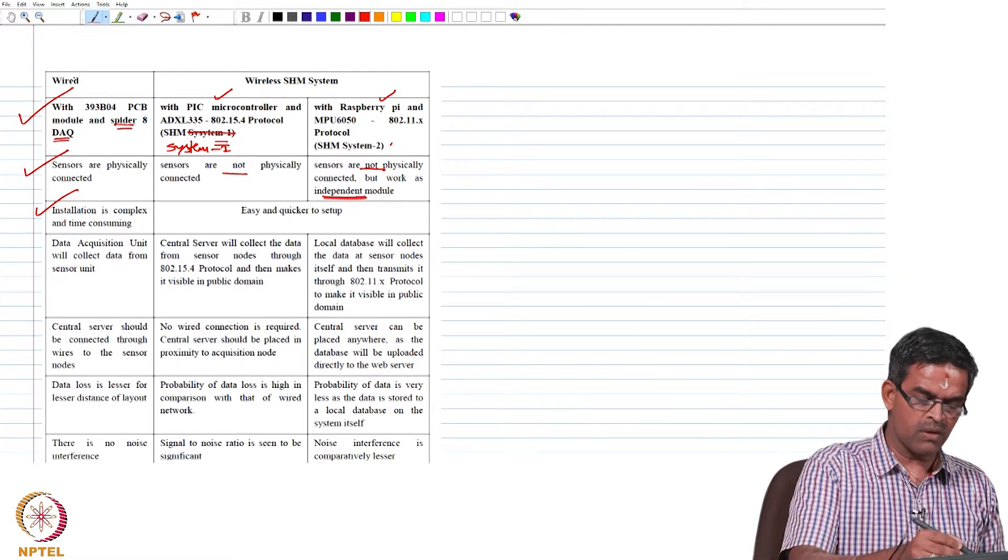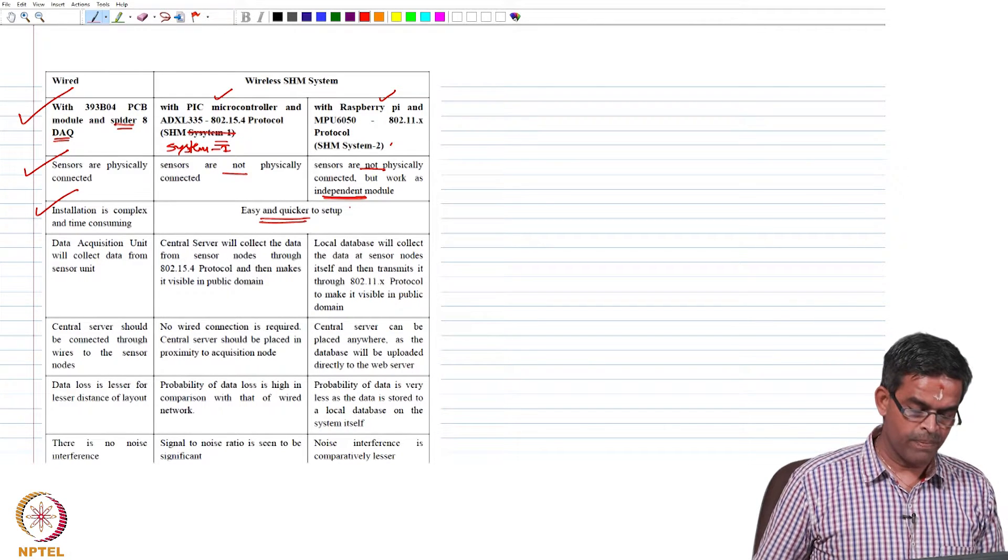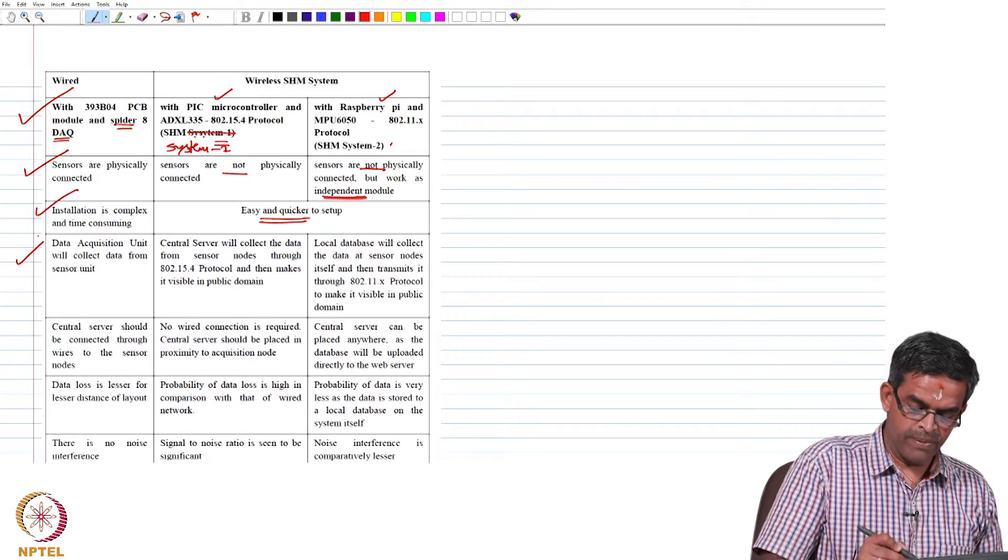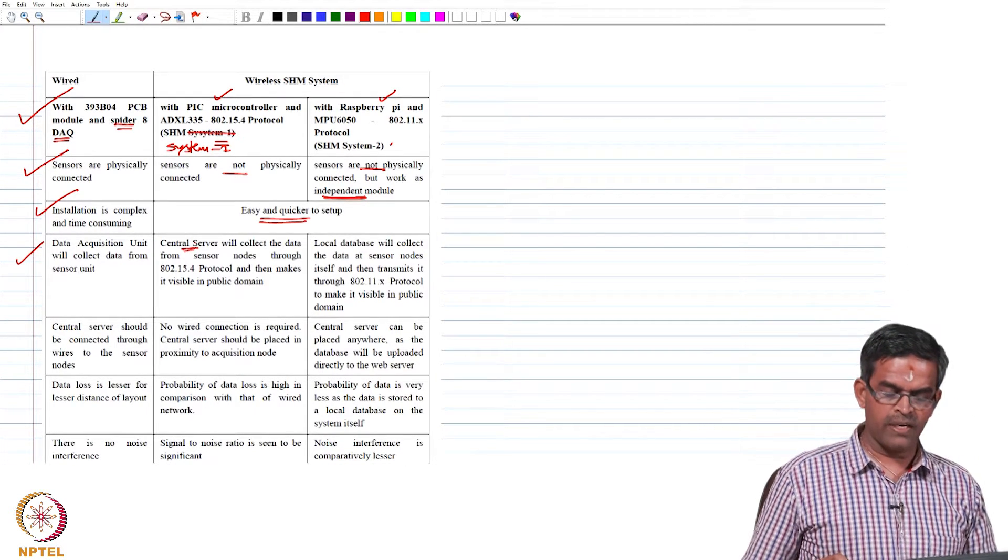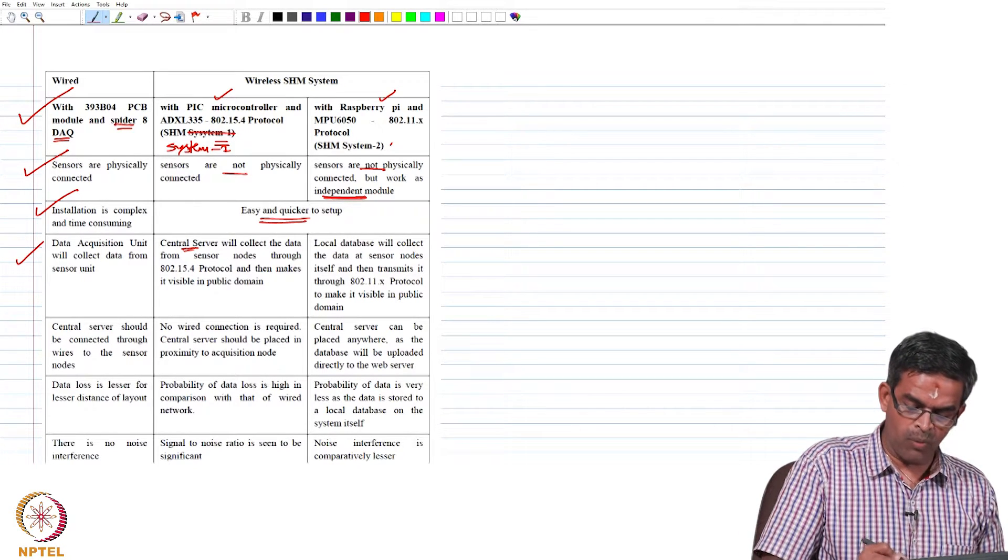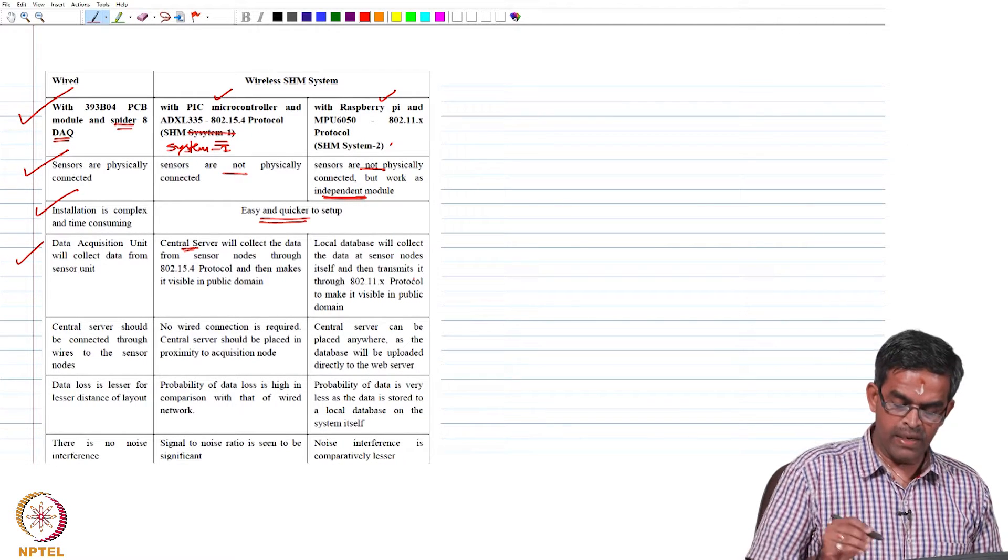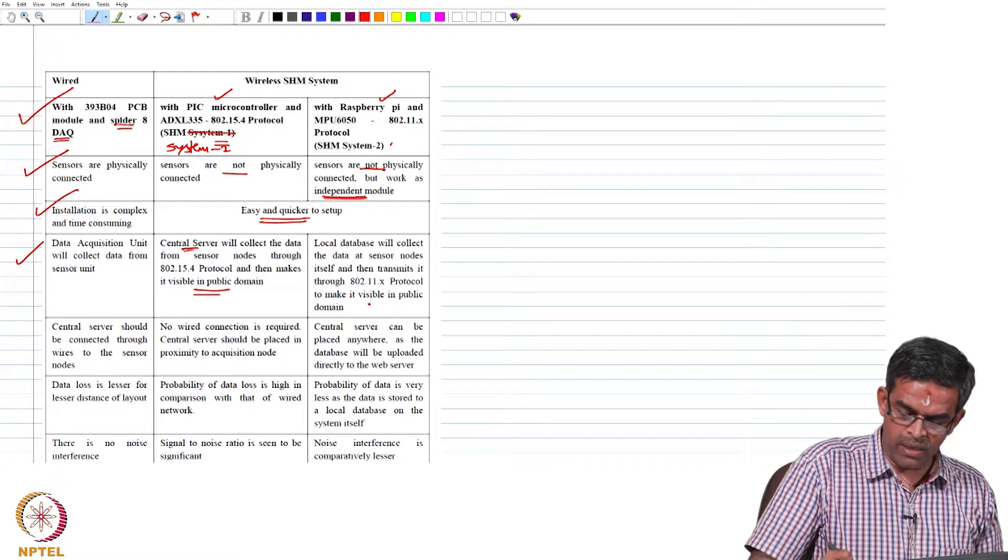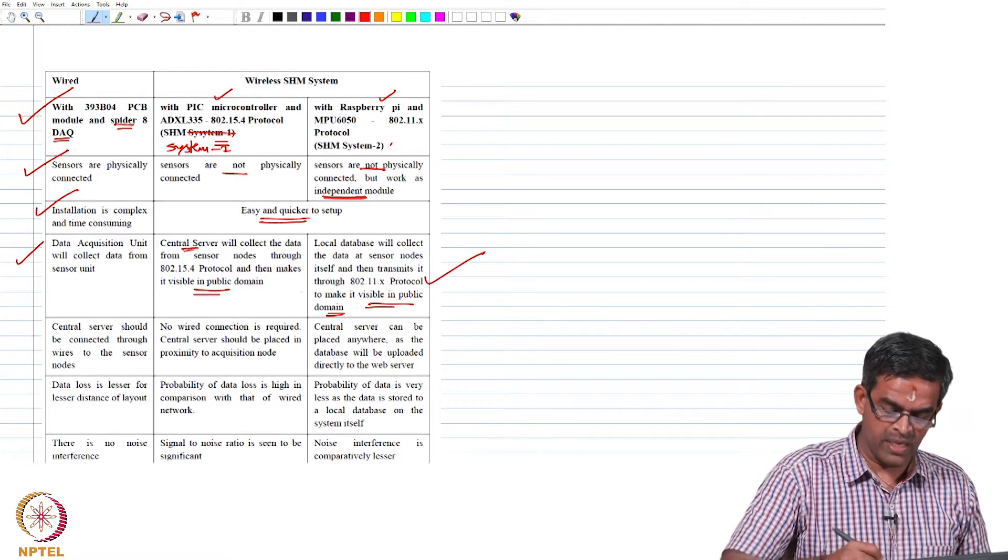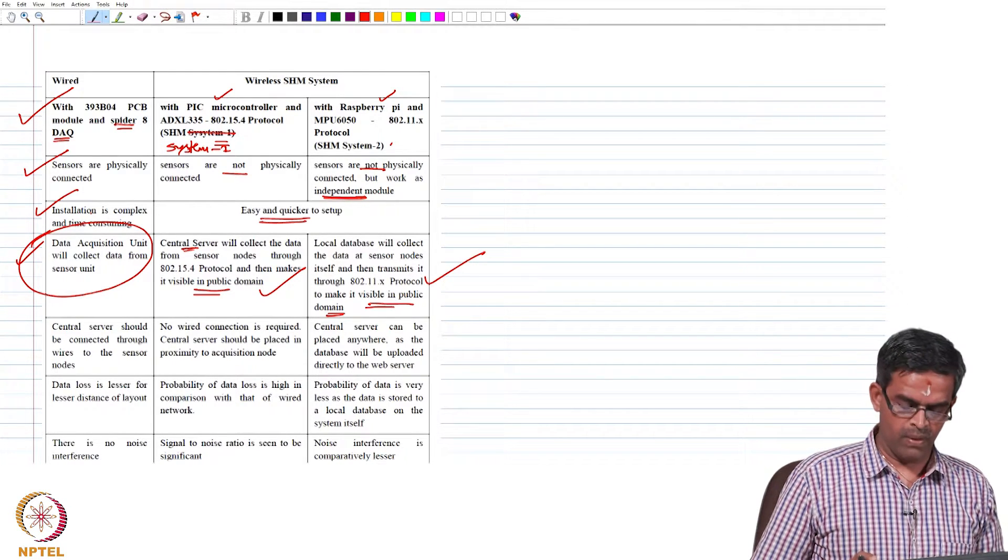The installation is complex because lot of wiring is required. It is very easy and quicker to setup in wireless. The DAQ will collect data from the sensor unit in wired, whereas in wireless the central server will collect the data from the sensor nodes and makes it visible to the public domain as and when required. The data acquired is available for checking in wireless, whereas in wired case the data acquired is not known.